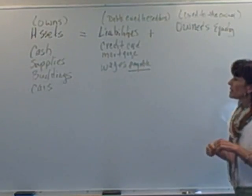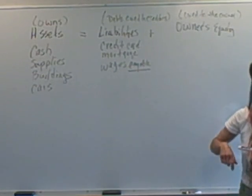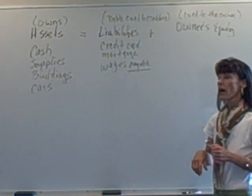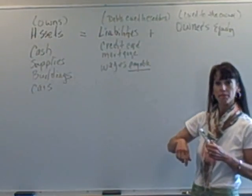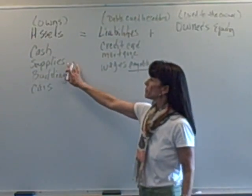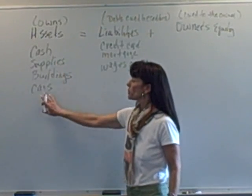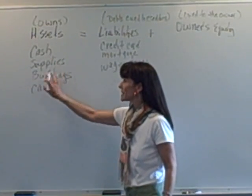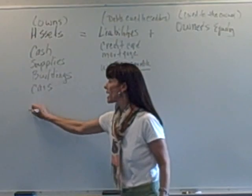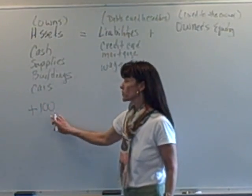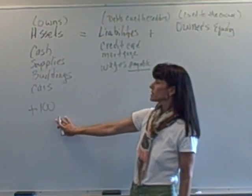Let's do a quick example. Let's say that the business buys supplies and it charges it. So when a business buys supplies, this is an asset, so we would want to go ahead and show this assets is going up. Let's say they buy a hundred dollars worth of supplies. So our assets go up by a hundred, but they charged it.